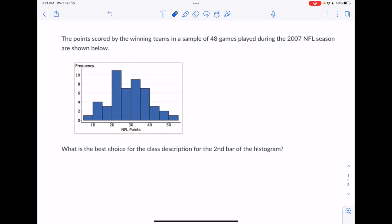The points scored by the winning teams in a sample of 48 games played during the 2007 NFL season are shown below. What is the best choice for class description for the second bar of the histogram?